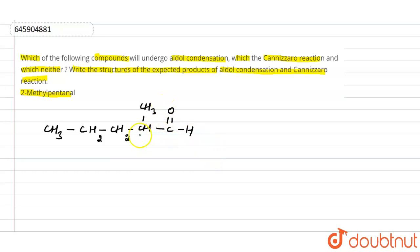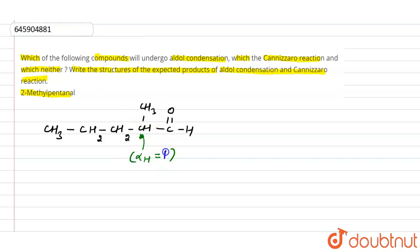The adjacent carbon of the carbonyl group is called the alpha carbon, and the hydrogen present on this carbon is known as alpha hydrogen. If any aldehyde or ketone has an alpha hydrogen, it will undergo aldol condensation. Here, 2-methyl pentanal has one alpha hydrogen, so it will give aldol condensation.